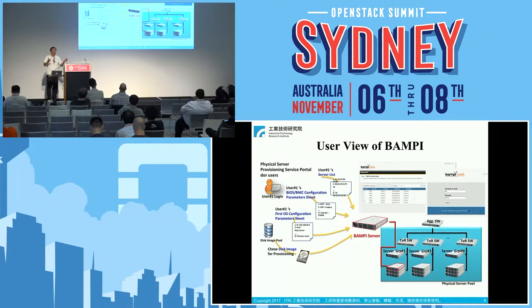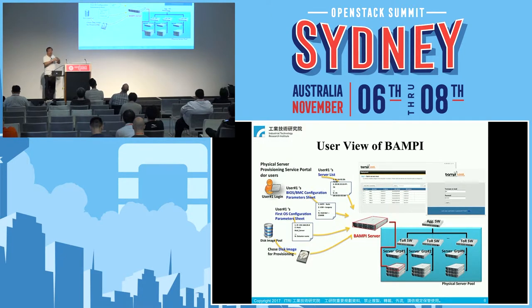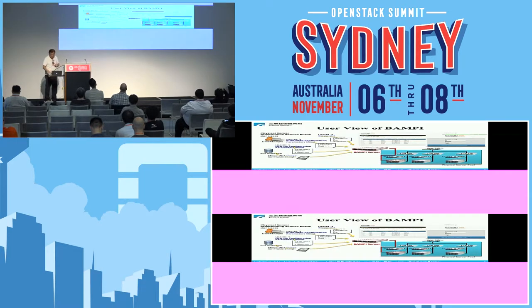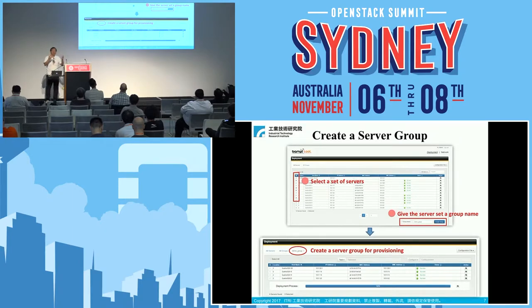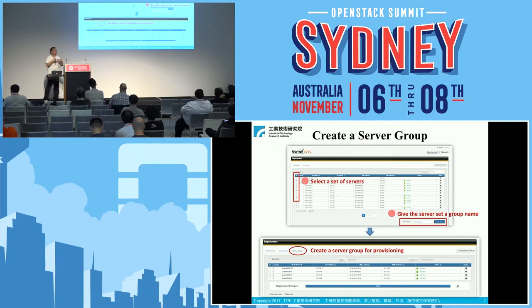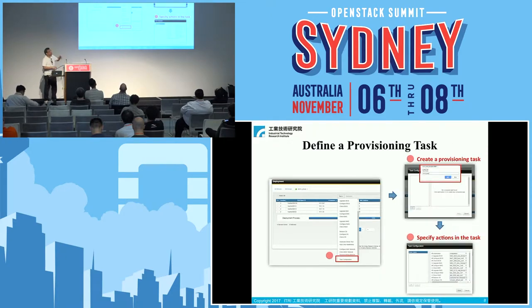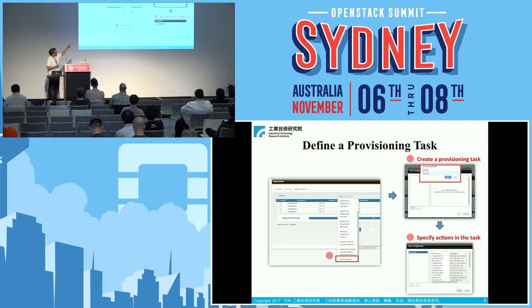From a user's point of view, you bring the BMP tool, your set of servers, BIOS/BMC configurations, firmware, OS images, and invoke the tool. You first create a server group — select the hundreds of servers you want to operate on and give that group a name. Then you define a provisioning task: a set of provisioning operations to execute on each server in the group. You give the task a name, define the actions — configure BMC options, BIOS options, upgrade firmware, etc. — and start it.